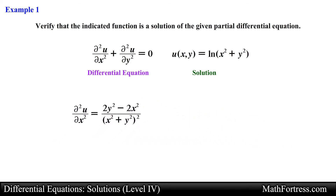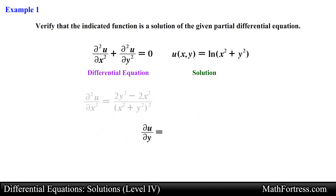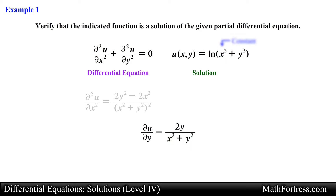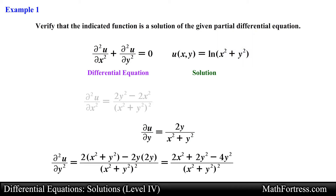Now let's find the second partial derivative of u with respect to y. We first find the first partial derivative of u with respect to y. Similar to the previous step, we consider x as a constant and proceed with the derivative. Applying the chain rule, we obtain the following expression. Then we take the partial derivative of u with respect to y once more, and obtain the following expression.